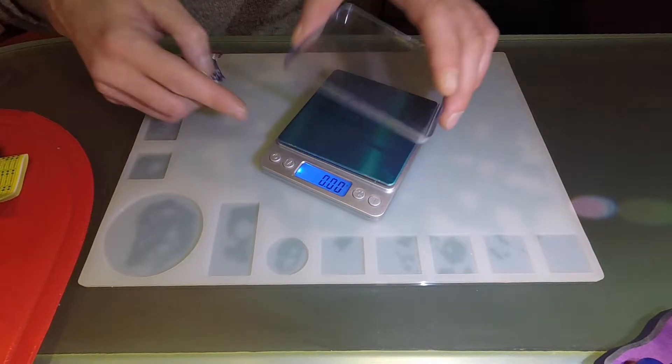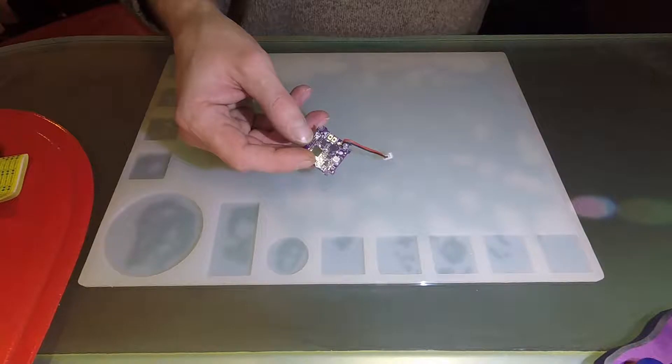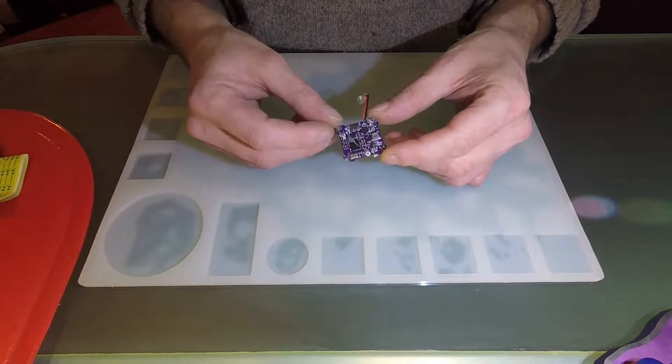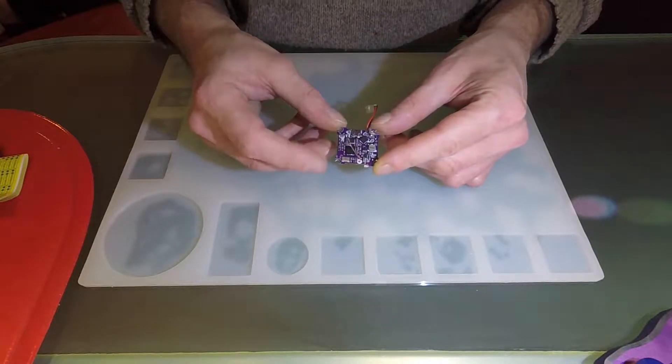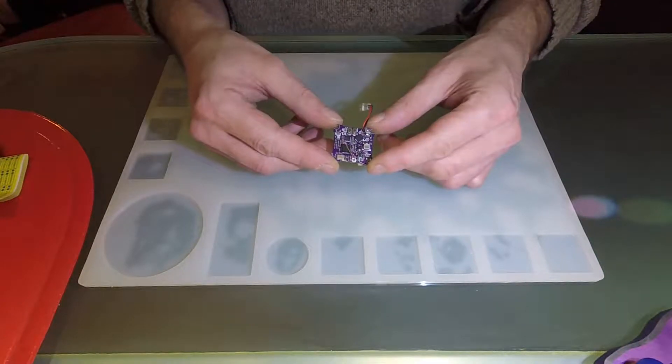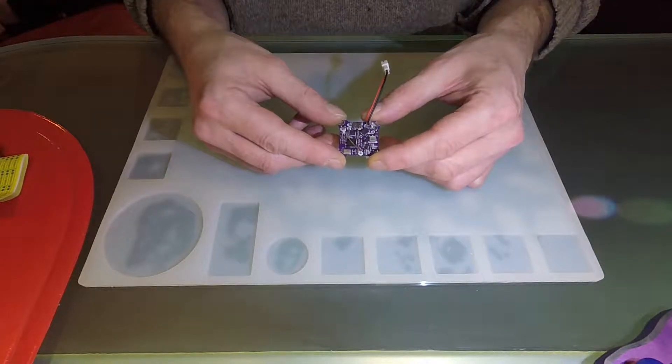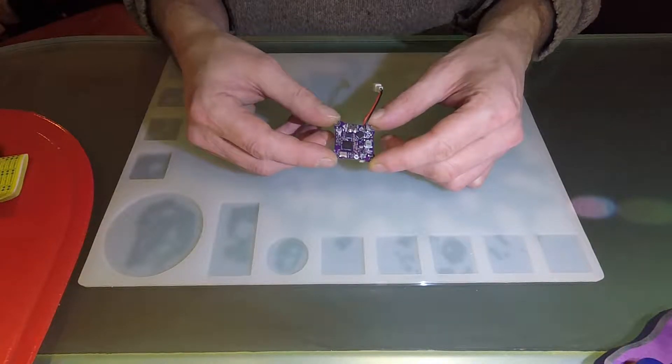It's very light but it doesn't integrate an RX. So you will have to add the RX of your choice: DSM, Flysky, or FrSky. On one hand you have the VTX integrated, but on the other hand you will have to add an RX.